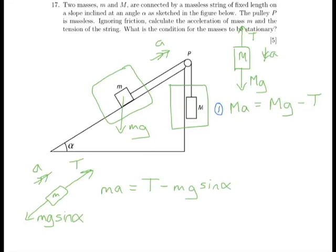OK, and let's rearrange that for T. Let's make things simpler. So T equals ma plus mg sin α. And we're going to call this one equation 2.